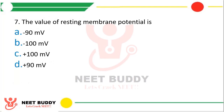Question: The value of resting membrane potential is — option A, minus 90 millivolts; option B, minus 100 millivolts; option C, plus 100 millivolts; option D, plus 90 millivolts. The correct answer is option A, minus 90 millivolts.